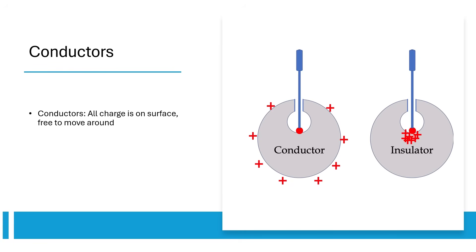A conductor is a special object where all the charge resides on the surface and is free to move around. Think about enclosing the inside of a conductor with a Gaussian surface. Gauss's law tells us that since there's no charge inside the conductor, there can't be an E-field inside the conductor either.